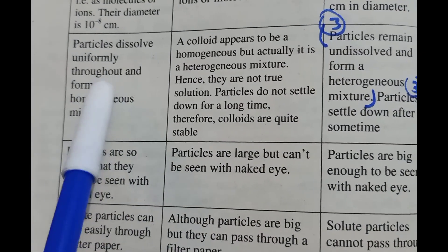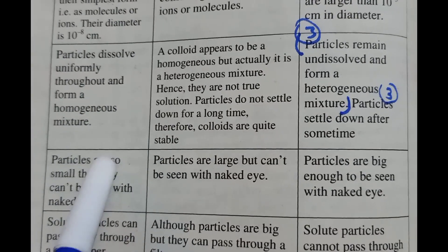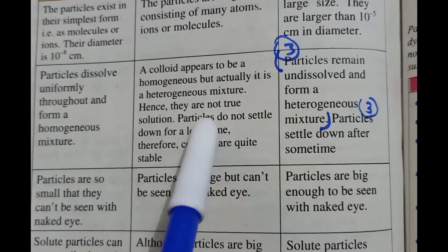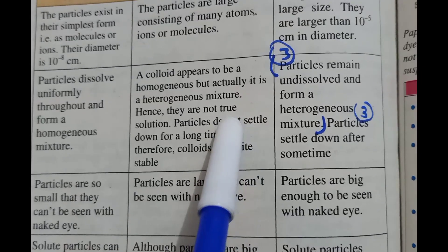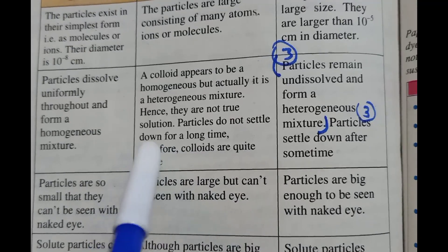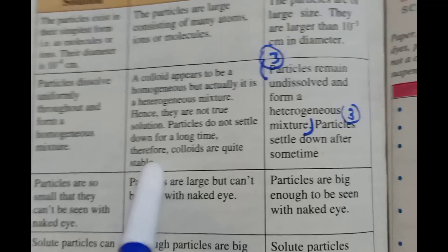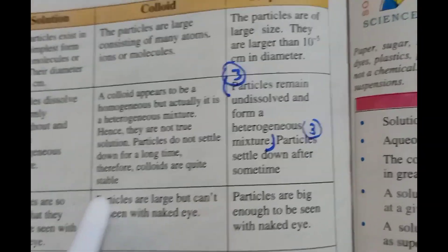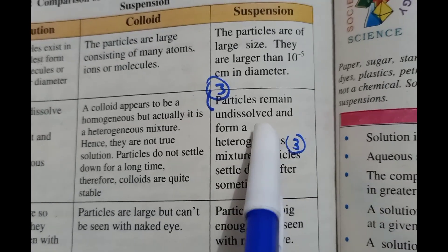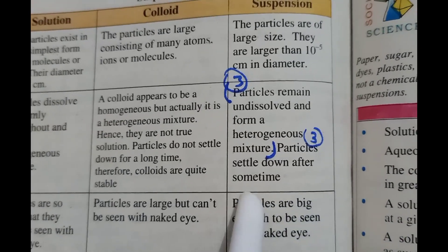In solutions, particles dissolve uniformly throughout and form a homogeneous mixture. A colloid appears to be homogeneous but actually it is a heterogeneous mixture. Hence, they are not true solutions. Particles do not settle down for a long time, therefore colloids are quite stable. In suspensions, particles remain undissolved and form a heterogeneous mixture. Particles...